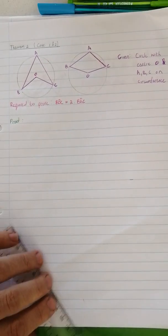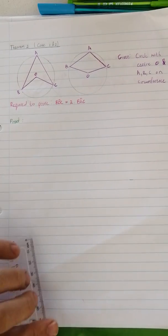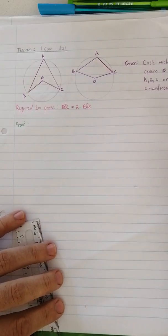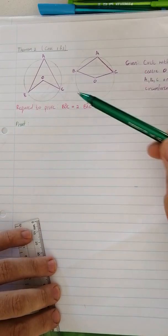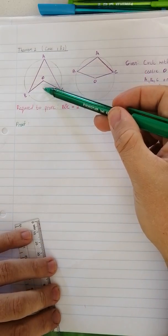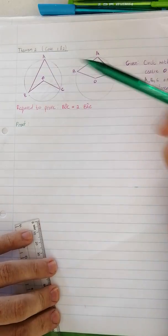Good morning mathematicians. We're continuing with Euclidean geometry today, going on to theorem 2. So what does theorem 2 say? It says angle at the center is twice the angle at the circumference.